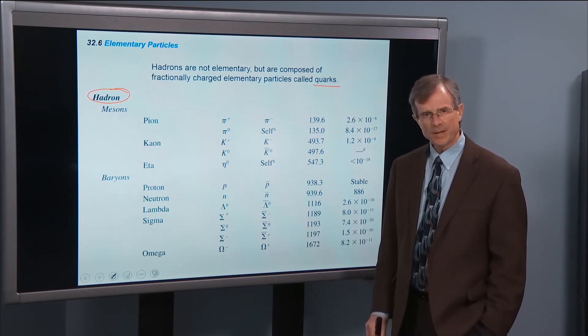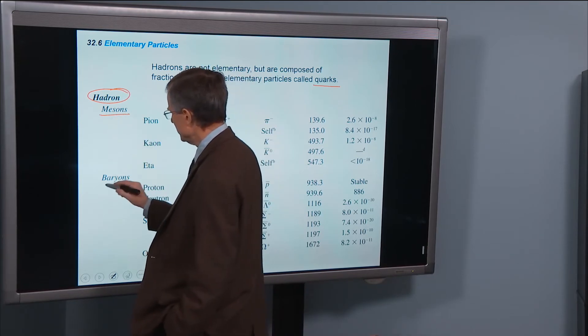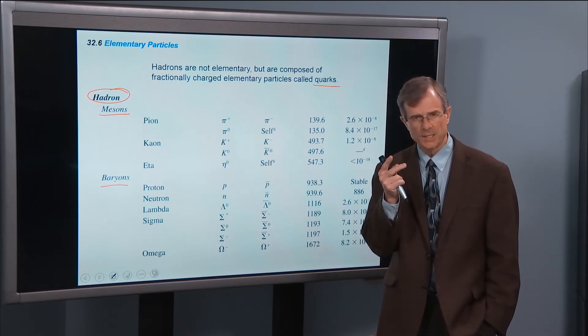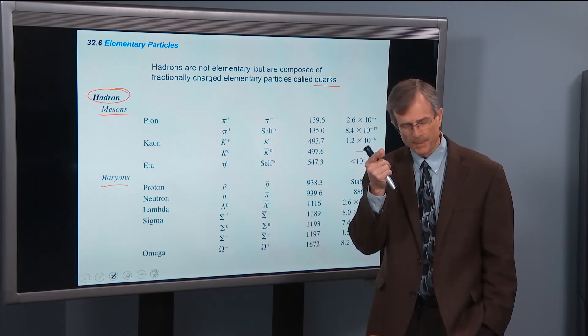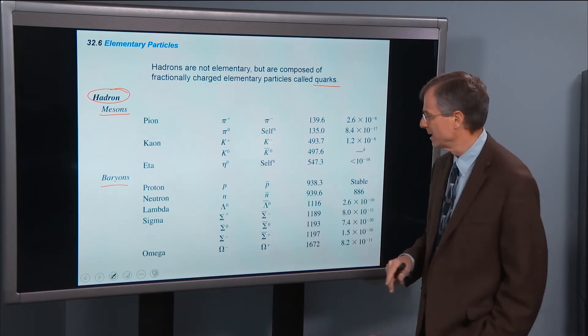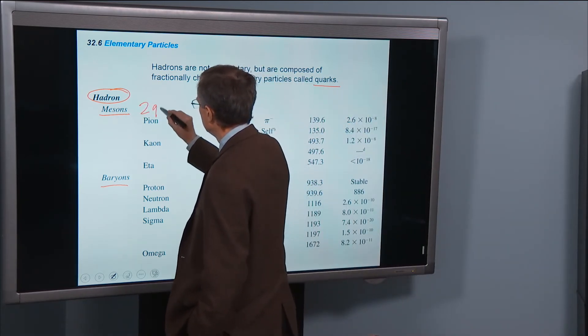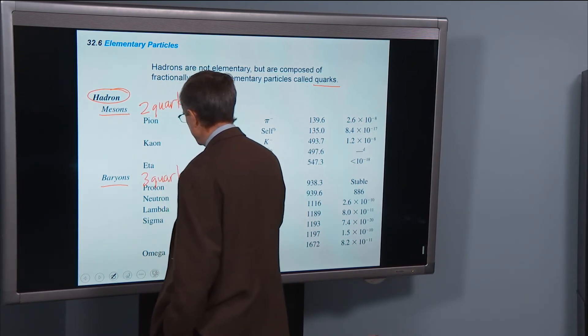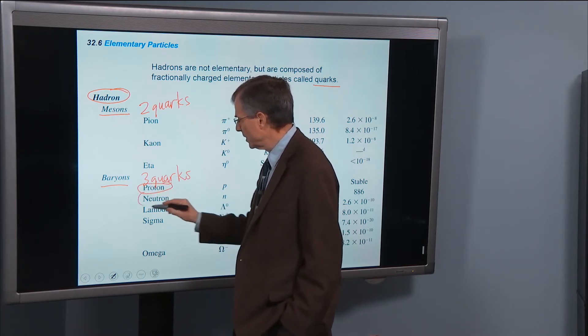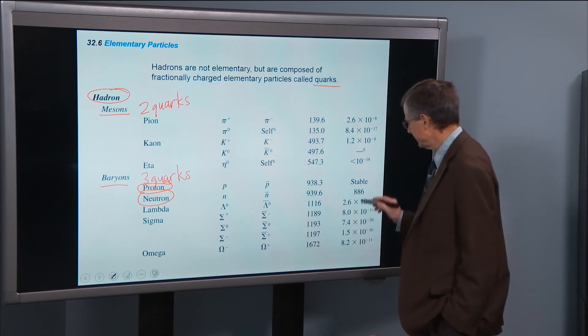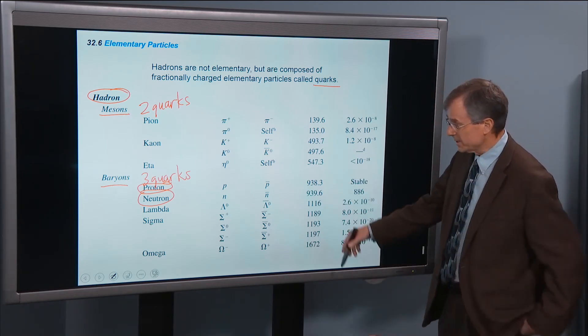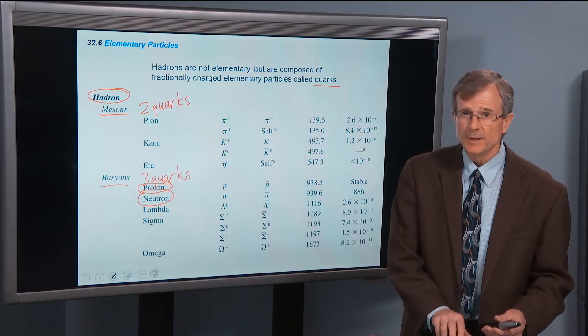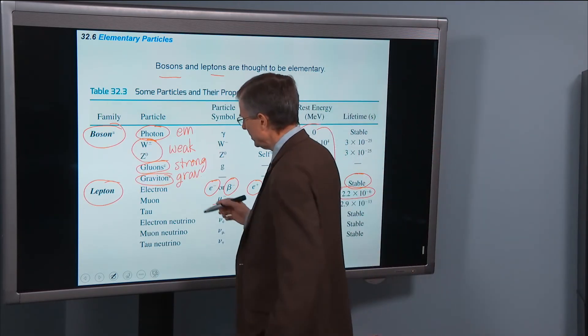Hadrons come in two flavors. They're called mesons, which are made up of two quarks each, a particle and an antiparticle pair of quarks, and baryons, which have three. A great example of a baryon is the proton and the neutron.